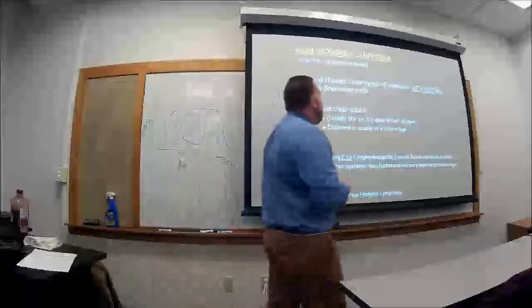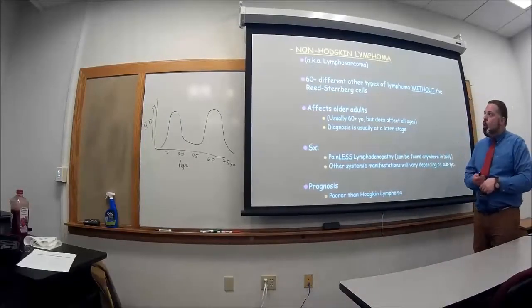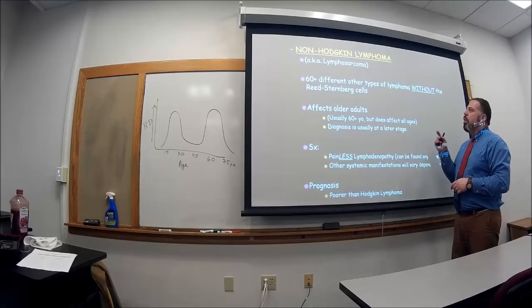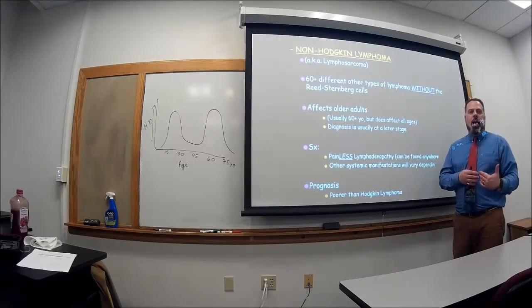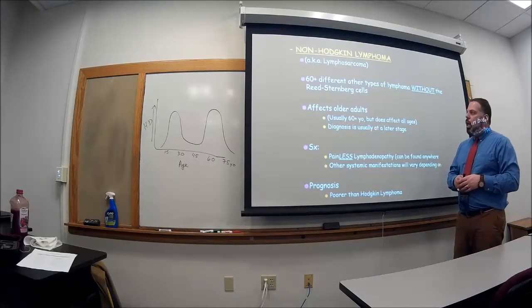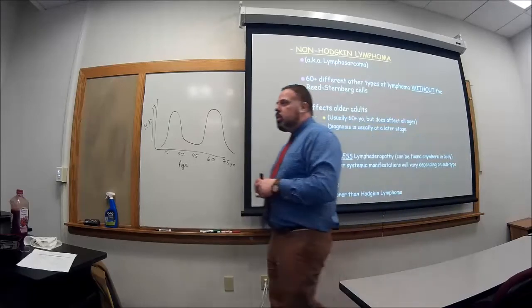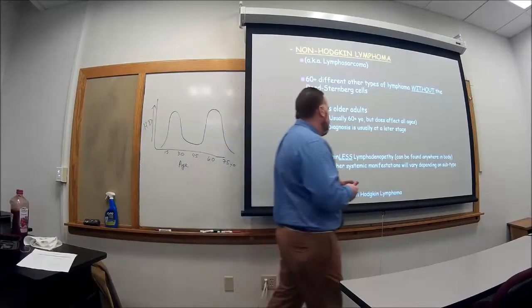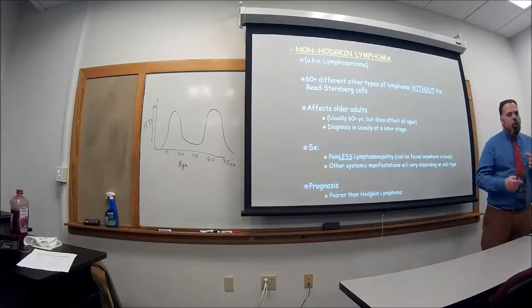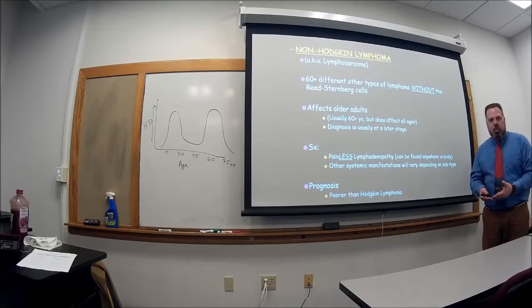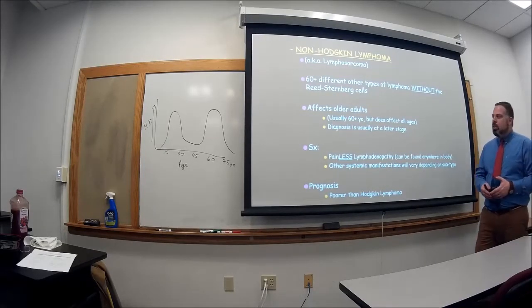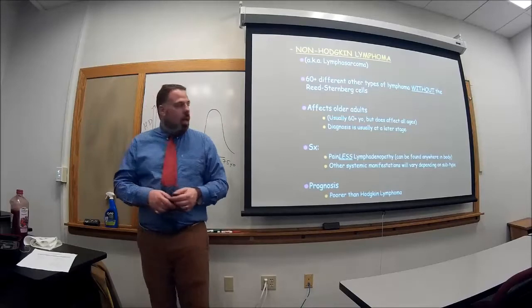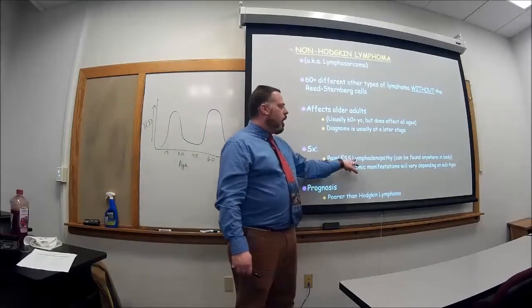So let's talk about non-Hodgkin's lymphoma, also known as lymphosarcoma. There's about 60 or 70 different types of lymphoma without the Reed Sternberg cell, thus giving the name non-Hodgkin's lymphoma. It affects older adults, usually 60 years old, but it does affect all ages, but we see a bigger percentage of them happening in elderly people. But the bad part is that it usually is diagnosed at a later stage of cancer. And because of that, they usually have a poorer prognosis than Hodgkin's lymphoma.